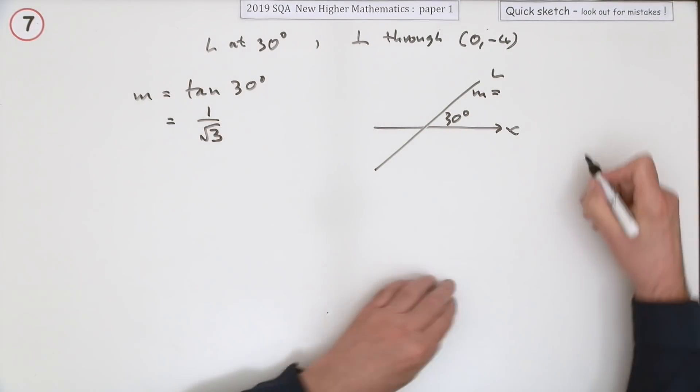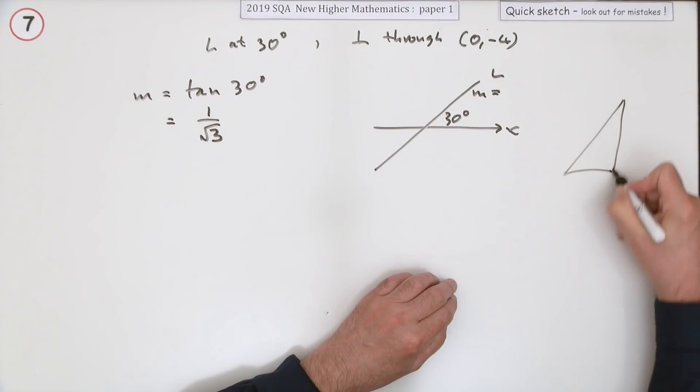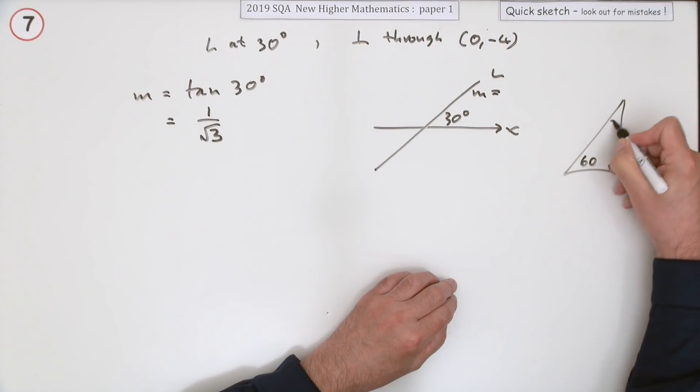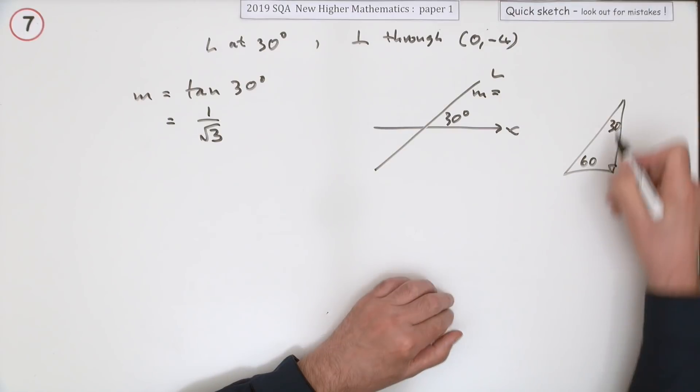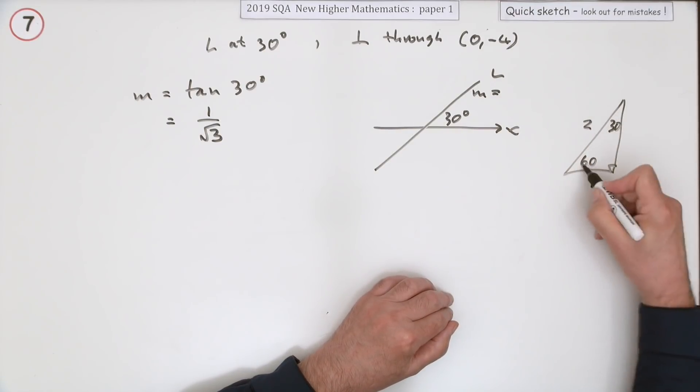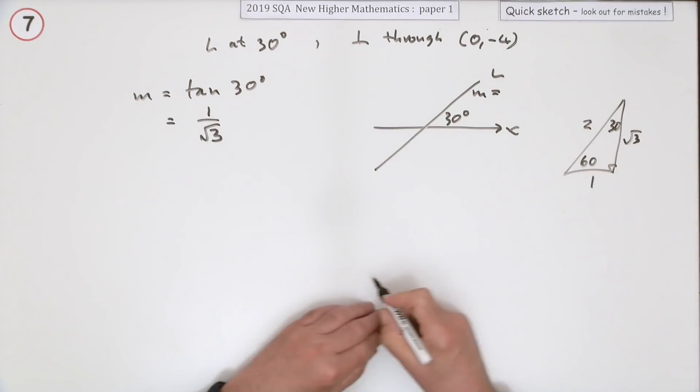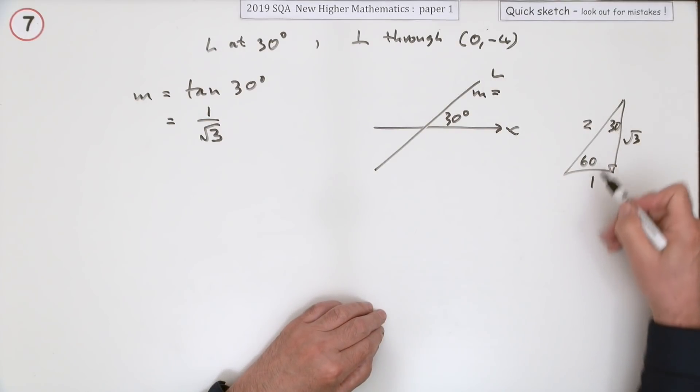Either just by remembering it or thinking of that 30-60 triangle: the 1, 2, root 3. 1 opposite the smallest angle, 2 is the hypotenuse, root 3 is the middle side. So the tangent of 30 is the opposite over the adjacent, the 1 over the root 3.